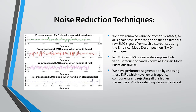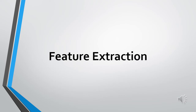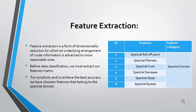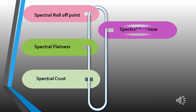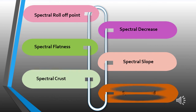Feature Extraction: Feature extraction is a form of dimensionality reduction by which an underlying arrangement of raw data is transformed to more suitable representations. The major goal of our study is to classify different human hand gestures, so we chose the best features that serve as a basis for classification. Before data classification, we must extract our feature matrix. For simplicity and to achieve the best accuracy, we chose features that belong to the spectral domain. These features include spectral rolloff point, spectral flatness, spectral crest, spectral decrease, spectral slope, and spectral spread.